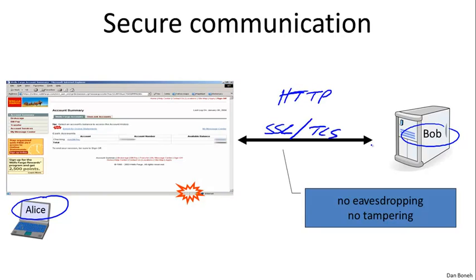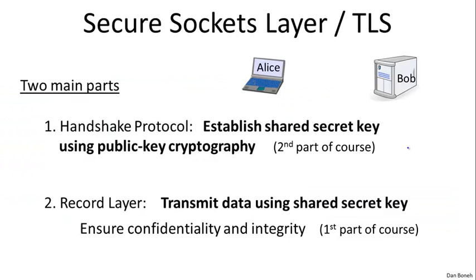The goals of these protocols is basically to make sure that data travels across the network such that an attacker, first of all, can't eavesdrop on this data. And second of all, an attacker can't modify the data while it's in the network. So no eavesdropping and no tampering. The protocol that's used to secure web traffic, called TLS, actually consists of two parts. The first part is called the handshake protocol, where Alice and Bob talk with one another, and at the end of the handshake, a shared secret key appears between the two of them. So both Alice and Bob know this secret key, but an attacker looking at the conversation has no idea what the key K is.